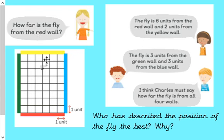Okay, so, if this is the fly, the young lady here is asking how far is the fly from the red wall. Okay, so, what we've got to have a look at here is what the other children are saying and actually which one fits best, who's described things the best. Okay, so, we need to know how far the fly is from the red wall. So, this young lady here is saying that the fly is six units from the red wall, six squares from the red wall, and two from the yellow wall. The young man here is saying that the fly is three units from the green wall and three from the blue wall. And the bottom one here says that I think Charles must say how far the fly is from all four walls. So, the question here is who has described the position of the fly the best and why?